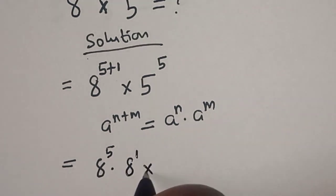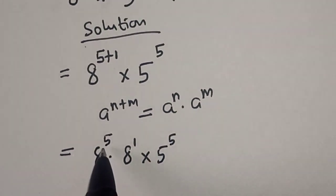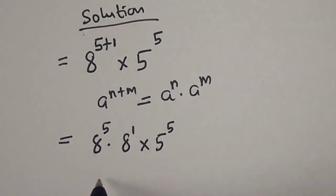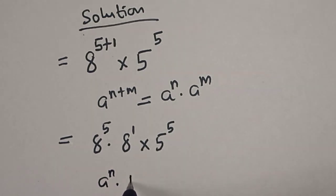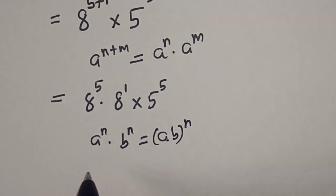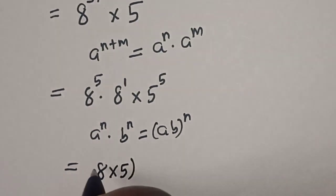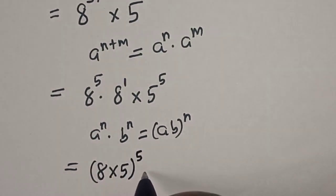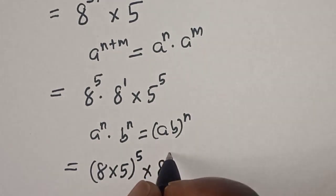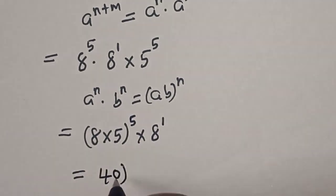This gives us 8 to the power of 5 multiplied by 8 raised to power 1, then multiplied by 5 to the power of 5. Now we have power of 5 on both terms. Using the rule: a raised to power n multiplied by b raised to power n equals (ab) to the power of n, we get 8 multiplied by 5, to the power of 5, multiplied by 8 raised to power 1.